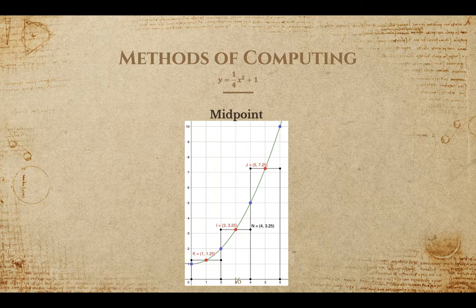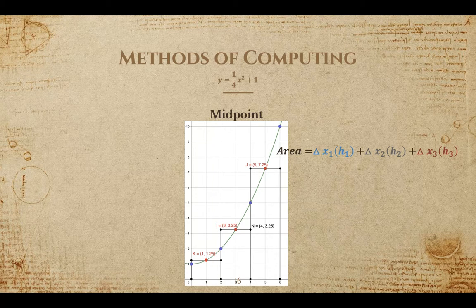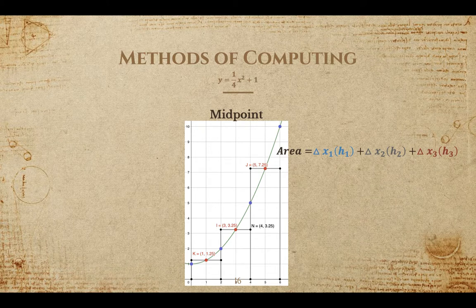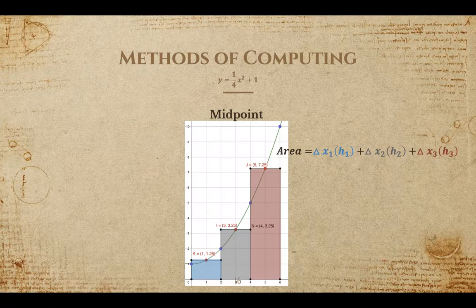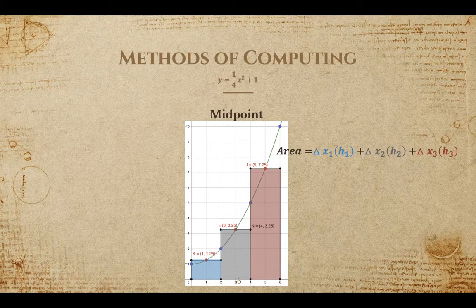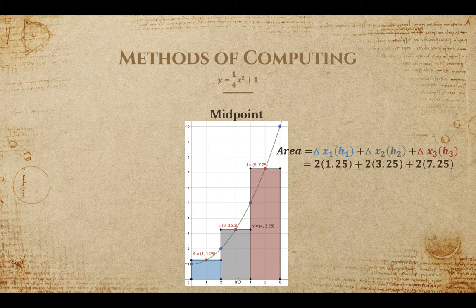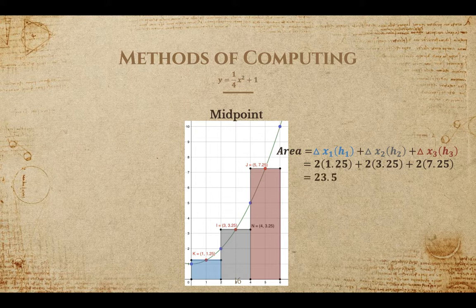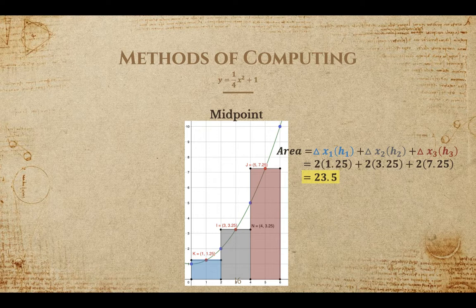Our final method, midpoint, is a bit different from the previous two methods. In this case, we will have to plug our x values into our equation to find the exact y value, since they don't fall on grid point intersections. But finding the area of those rectangles is still the same. Our areas are 2.5, 6.5, and 14.5, respectively, for a total area approximation of 23.5 units squared.